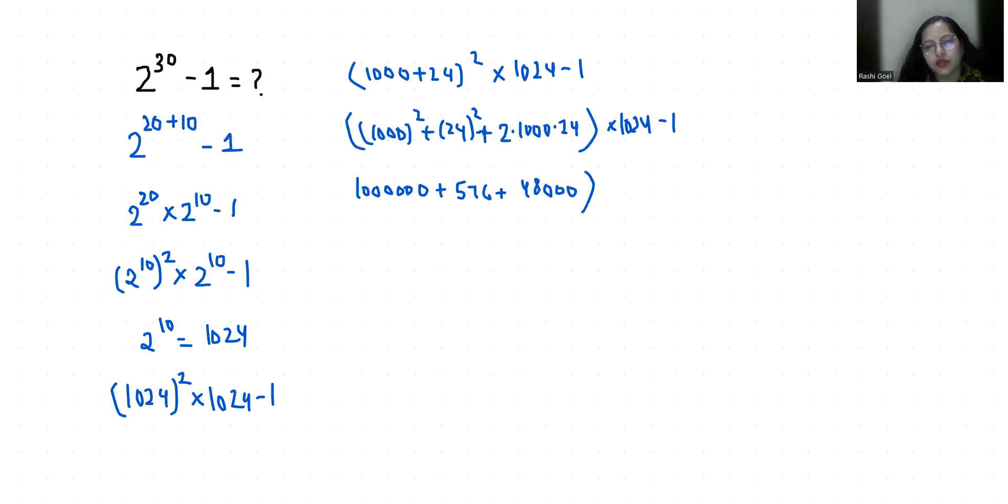Times 1024 minus 1. So when we add these 1,000,000 and 48,000 and 576, it becomes 1,048,576 times 1024.